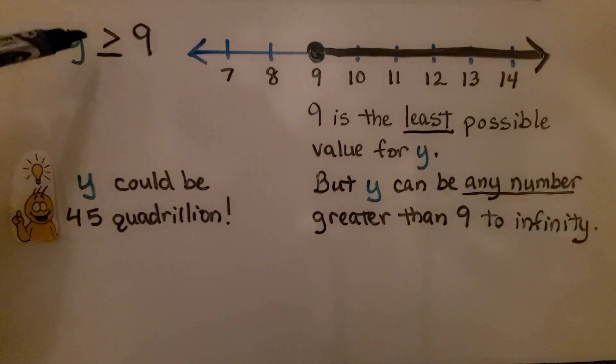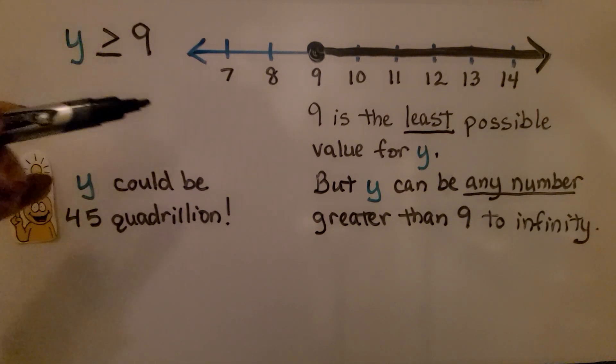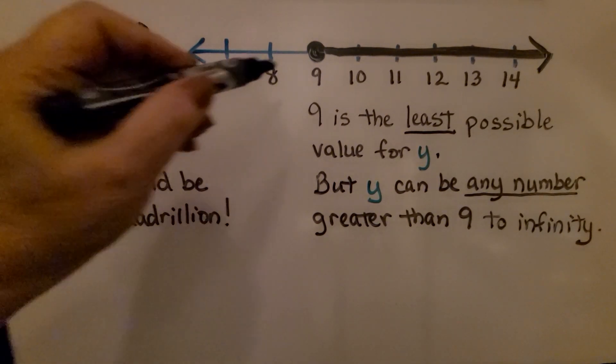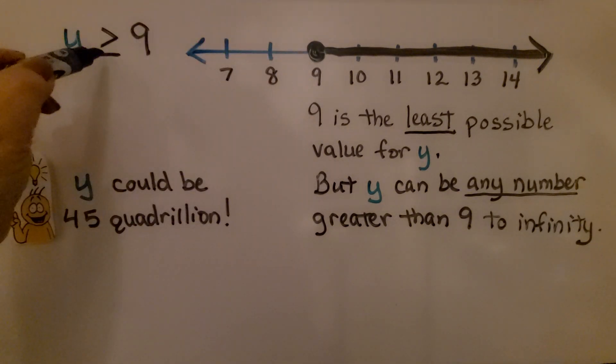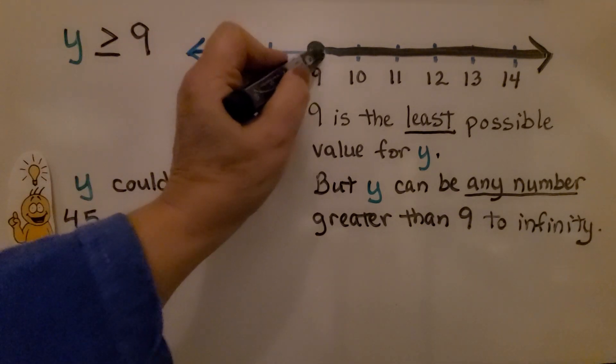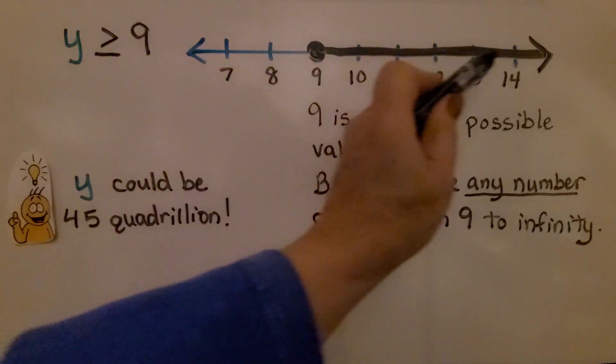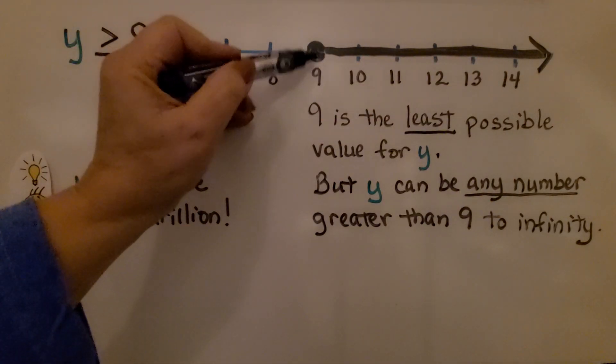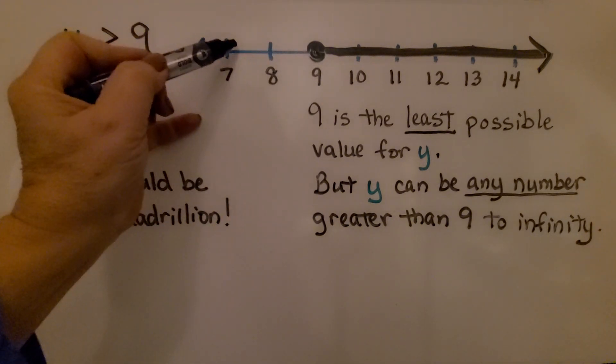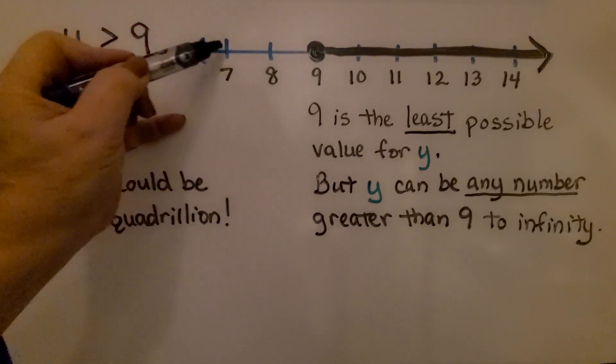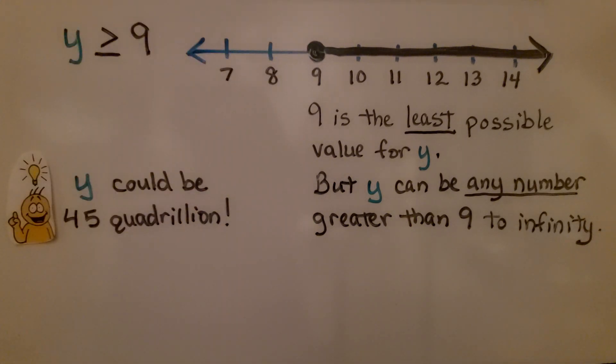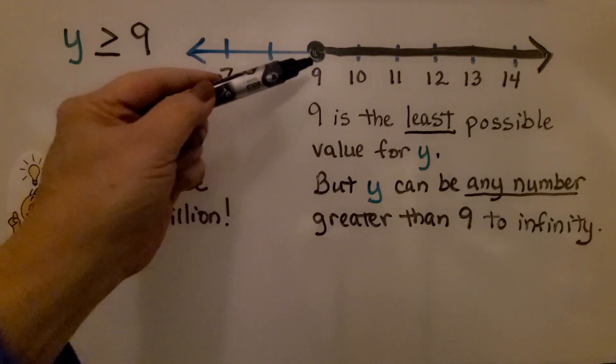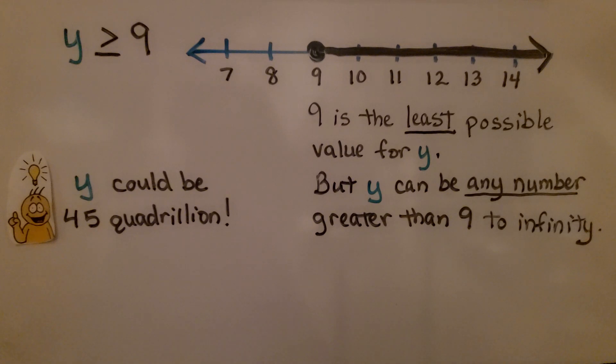Here we have y is greater than or equal to 9. If we graphed this, y could be any number that might be equal to it. So it could be 9 or any number greater. It's telling us that 9 is the least possible value for y. It can't get any smaller than this. But y could be any number greater than 9. Y could be 45 quadrillion. Any number going towards infinity.